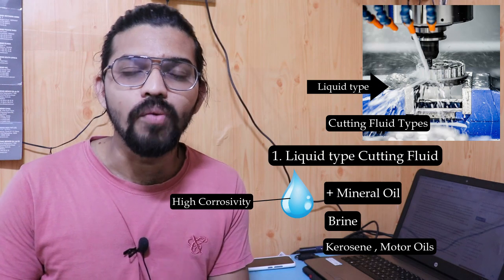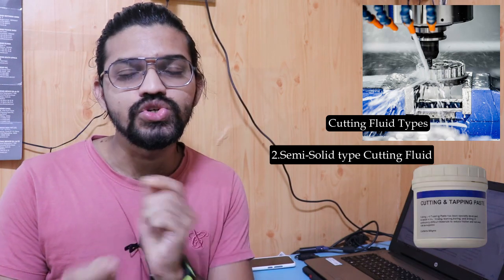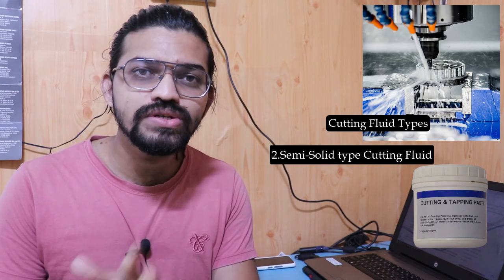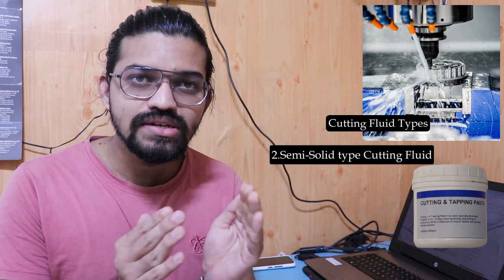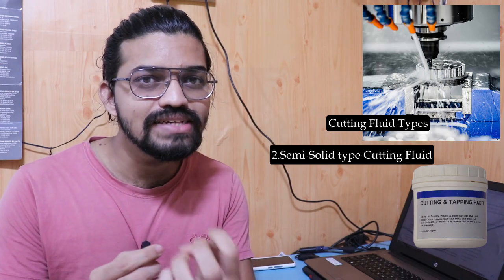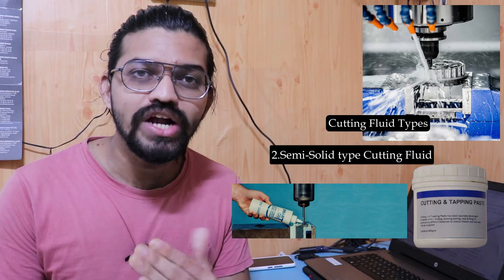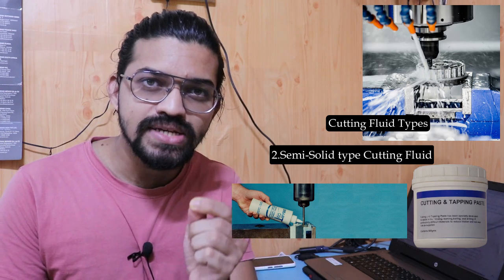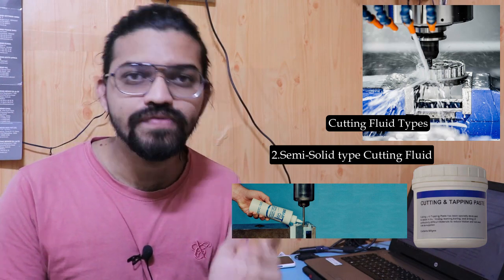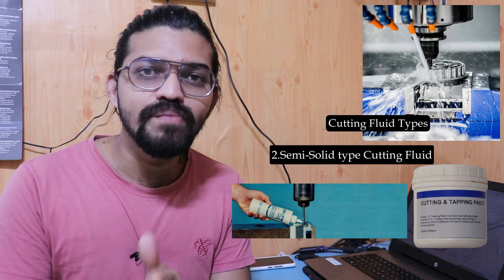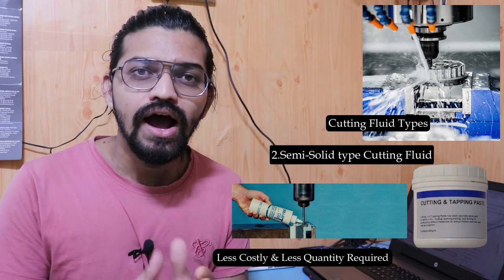The next type is the semi-solid cutting fluid, where a paste is used. This paste is used for processes where continuous supply of cutting fluid is not required. A smaller amount of paste is applied in specialized operations. For example, in tapping operations, a paste is applied and the tap is rotated into the drilled hole. This type is also used in drilling and boring operations for lubrication, and it is cost-effective since there is no continuous fluid supply.